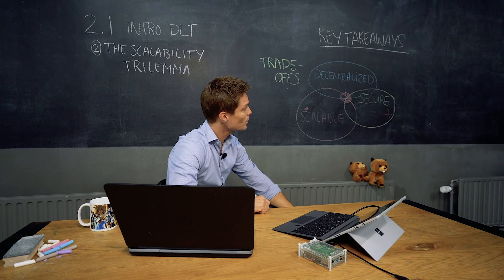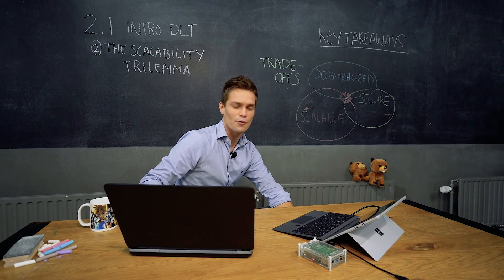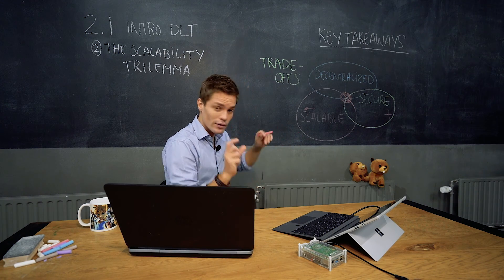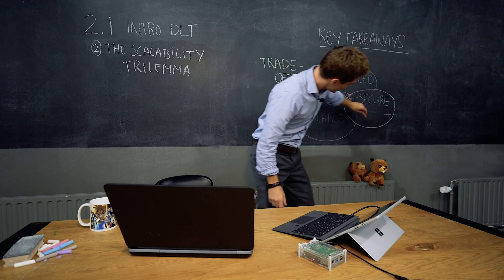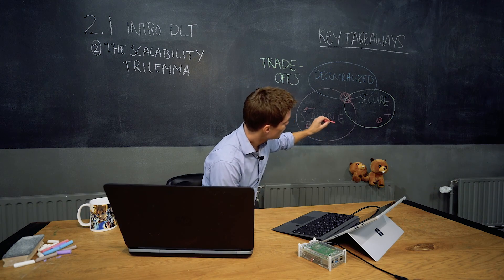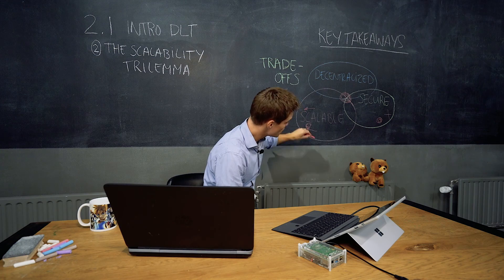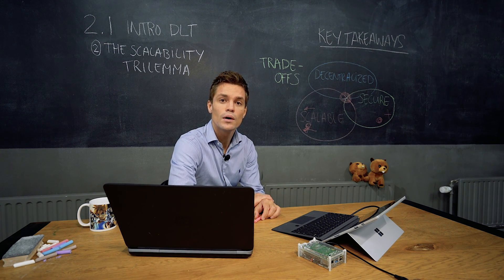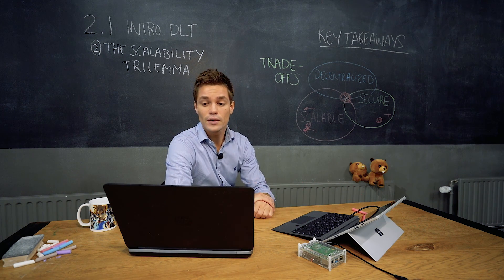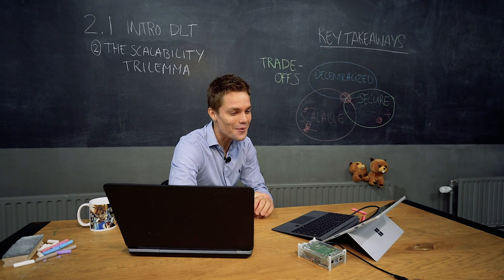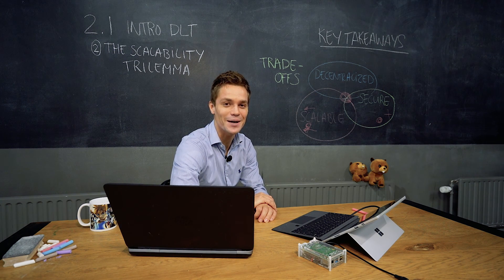So for now we did a quick recap of ledger technology. Next session is a very interesting one where we will explain the different properties you can tweak to move in this spectrum. For example, if I tweak the block size and create bigger blocks, I move towards more scalability but less decentralization. We will present an overview of these variables in a structured manner called the crypto flower. See you there.